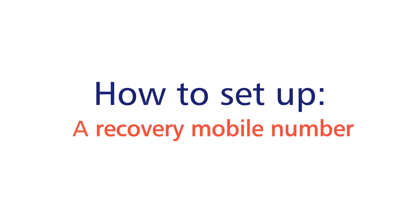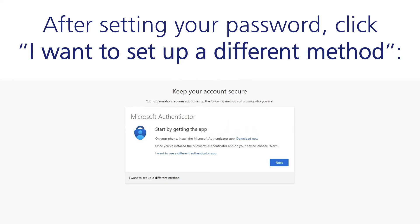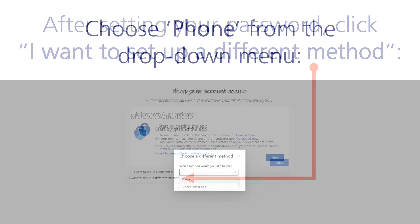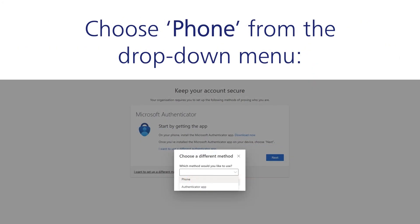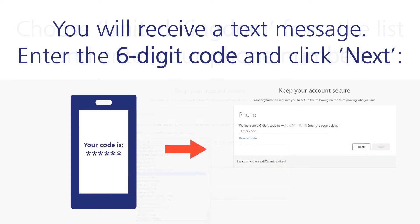How to set up a recovery mobile number. After setting your password, click 'I want to set up a different method.' Choose Phone from the drop-down menu. Choose United Kingdom from the list and enter your phone number. You will receive a text message. Enter the six-digit code and click Next.